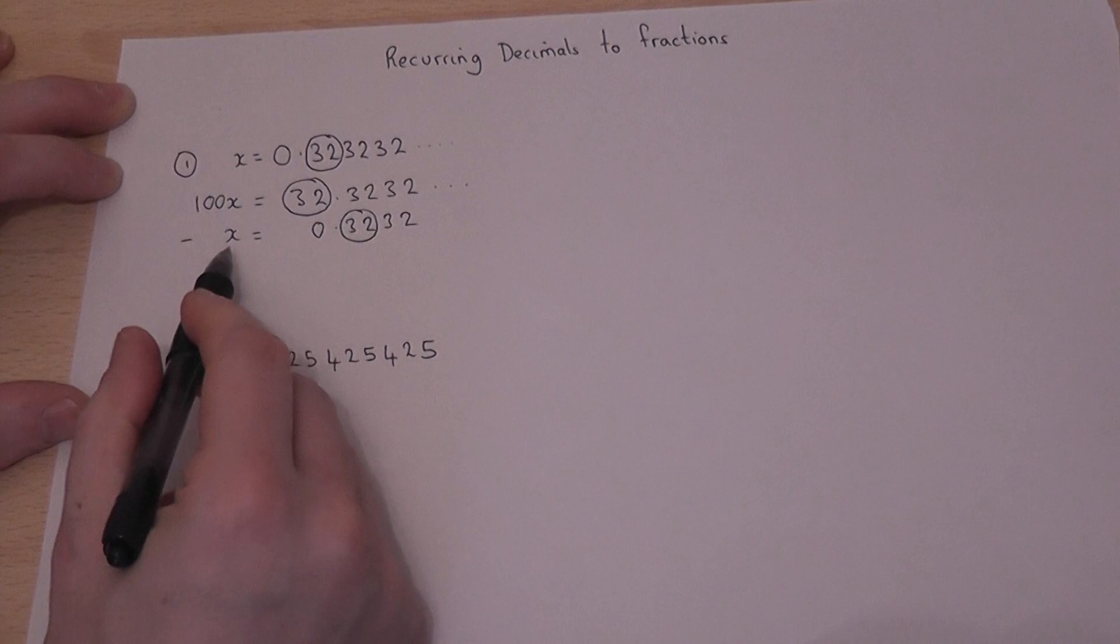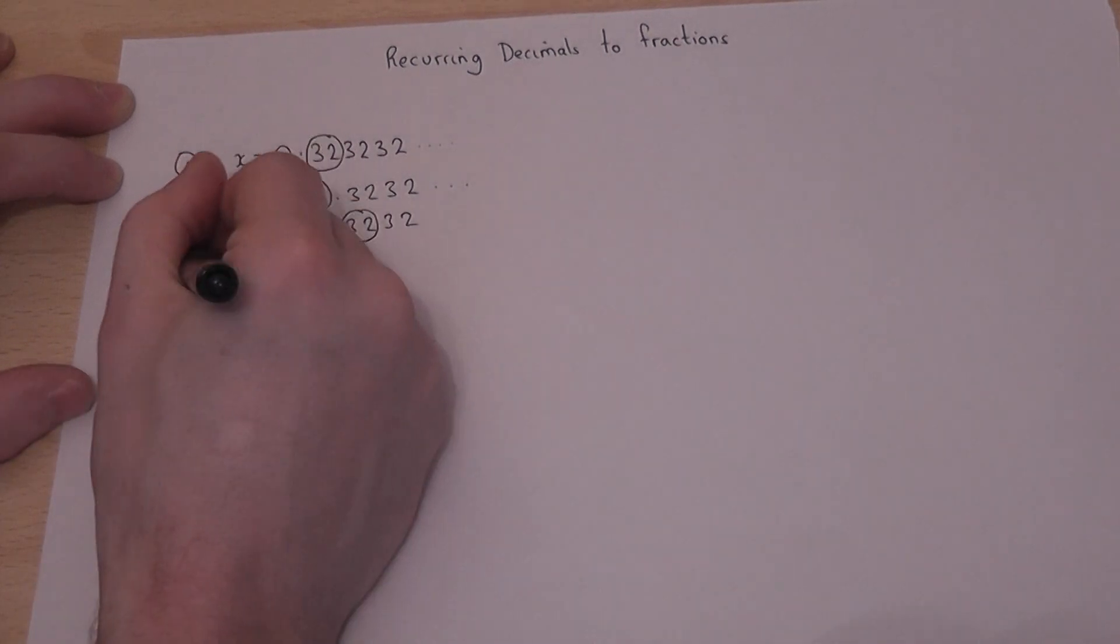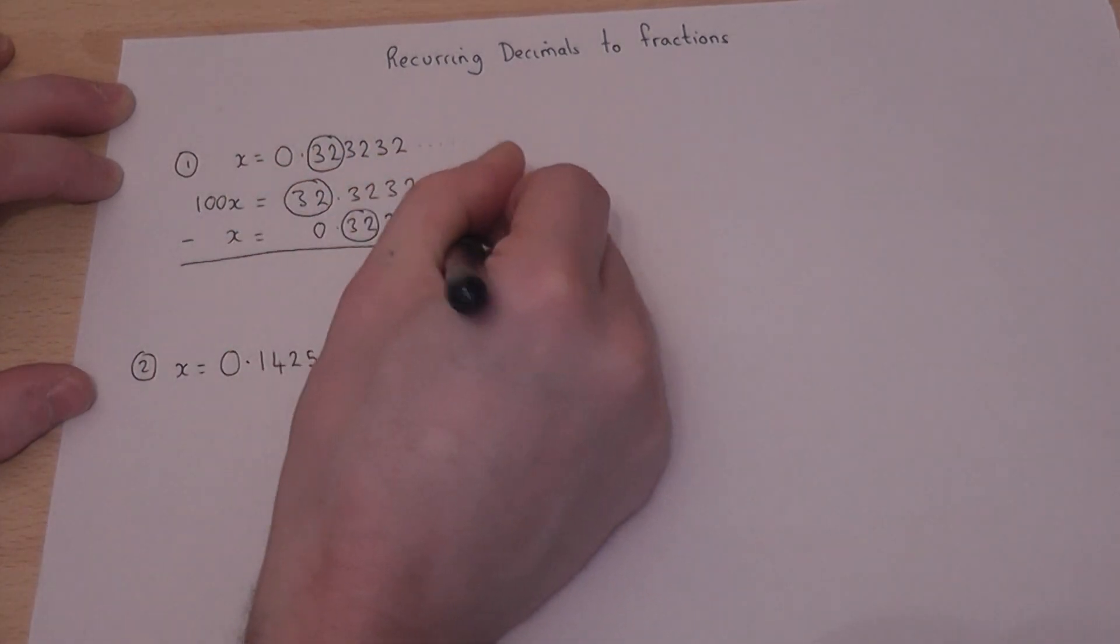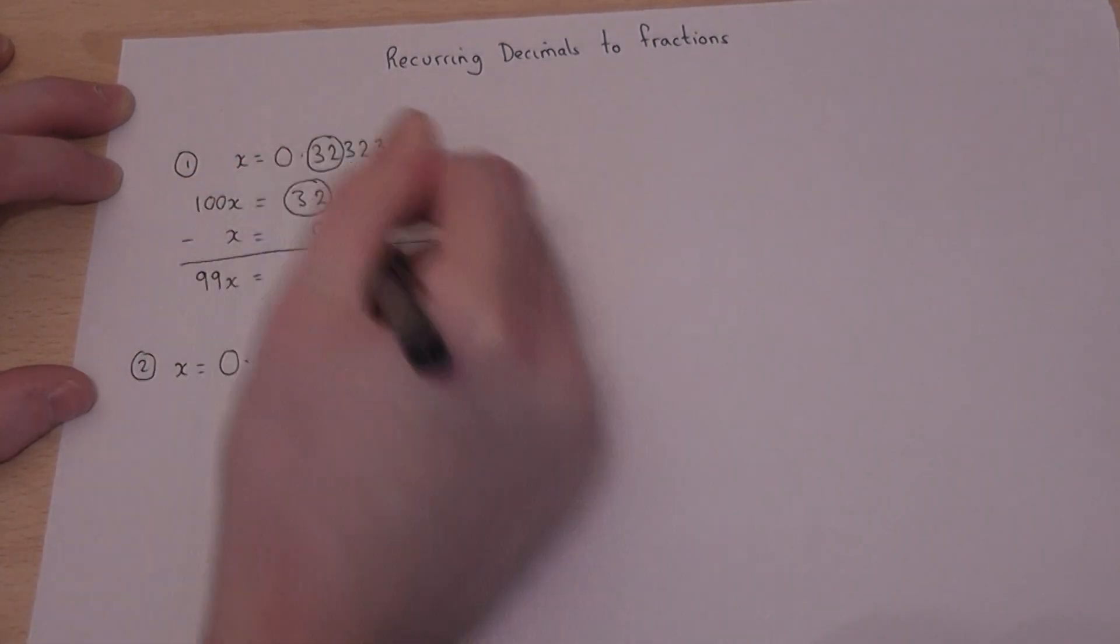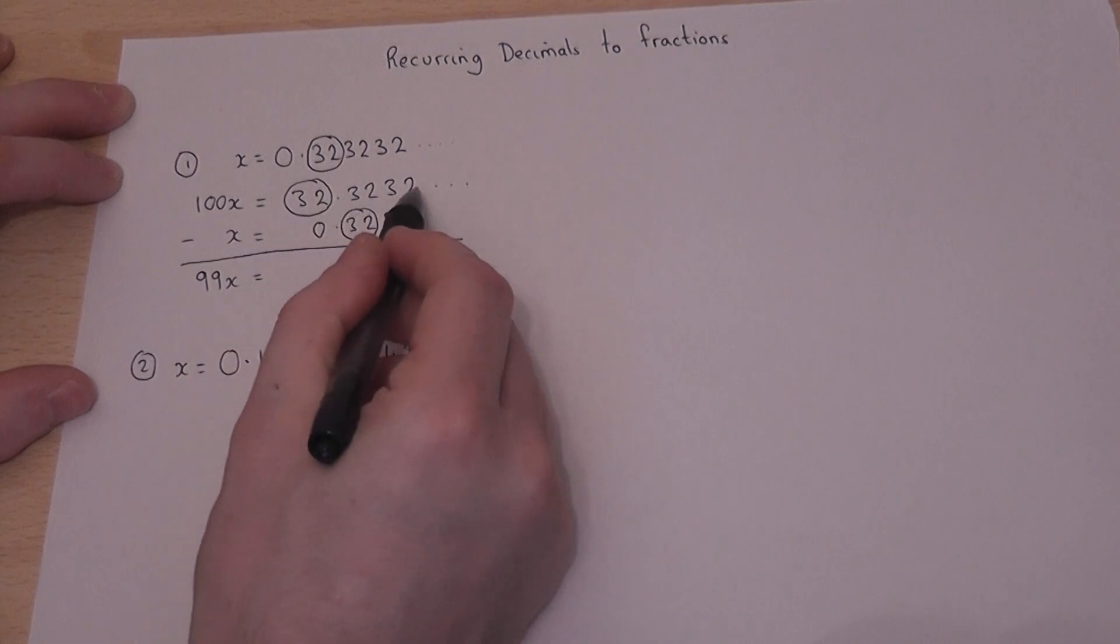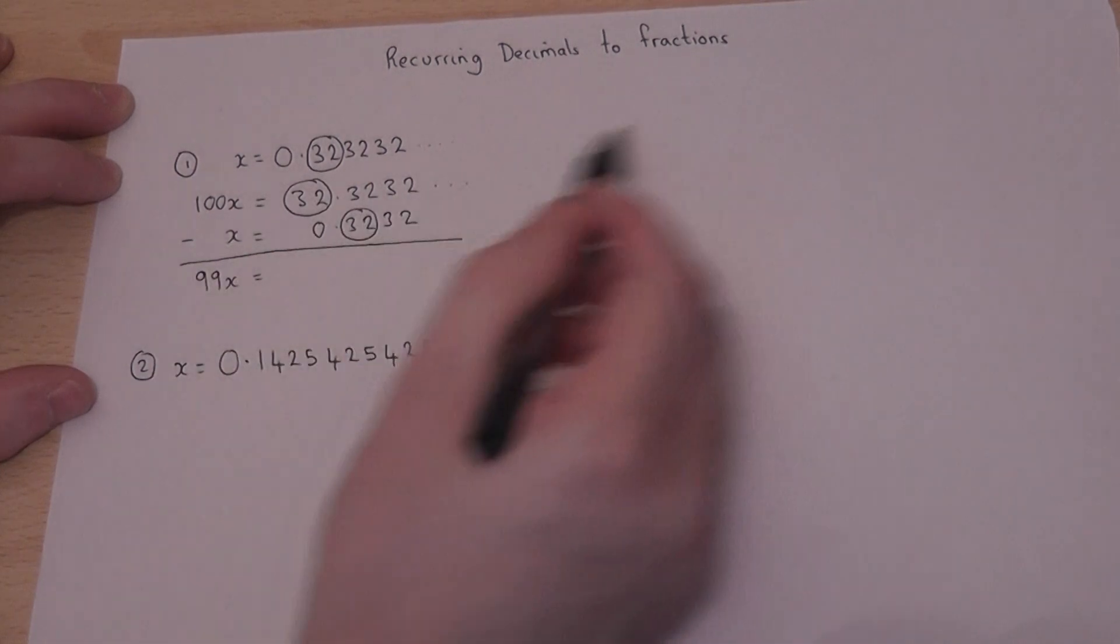So if I subtract x from 100x, then something clever happens. 100x take away x is 99x.